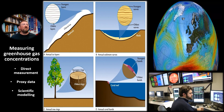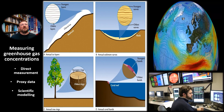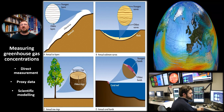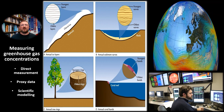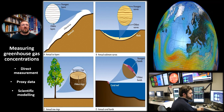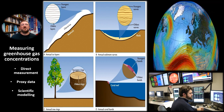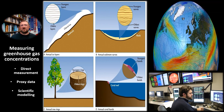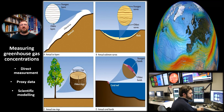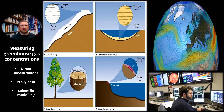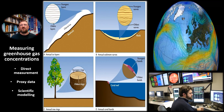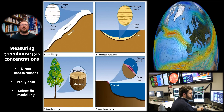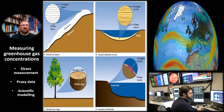How do we know this? Variations in greenhouse gas concentrations can be measured in a variety of ways. First, we can use direct measurements: we can measure temperature, rain and snowfall, the chemical composition of air and water, or use technologies like satellite imaging and weather balloons.